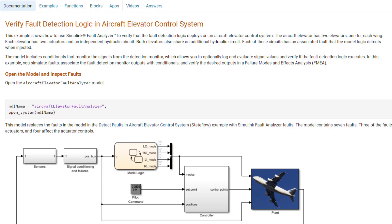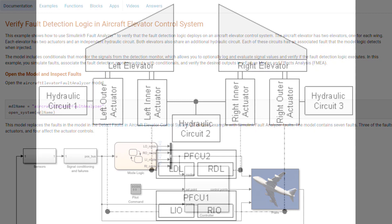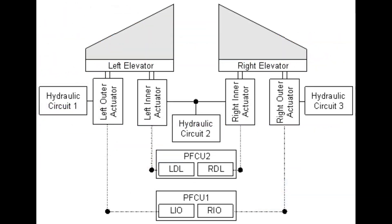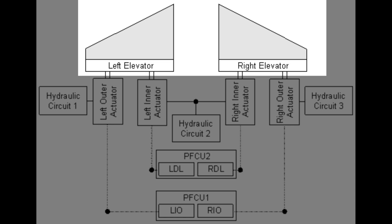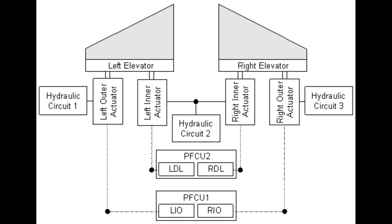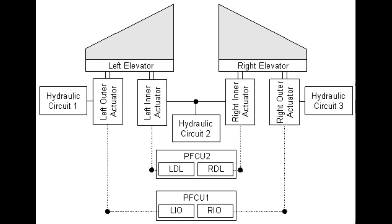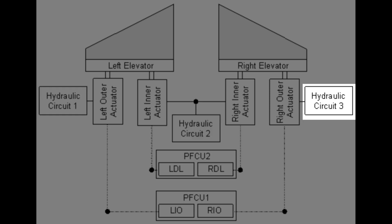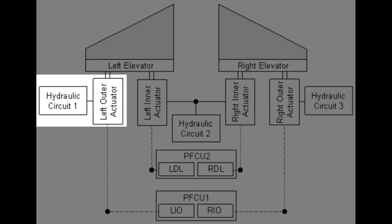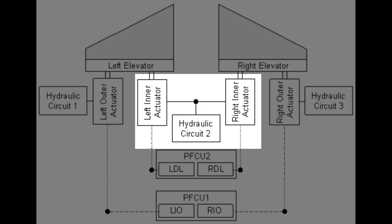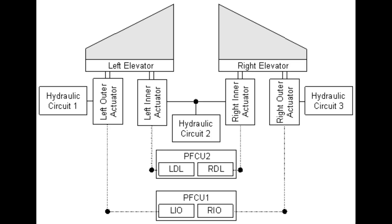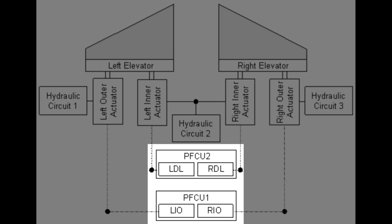Feel free to open the example using the link below to follow along. A typical aircraft has two elevators, one on each side of the fuselage, attached on the horizontal tails. To enhance the safety of the aircraft, the elevator control system contains redundant parts: four independent hydraulic actuators with two per elevator, three hydraulic circuits that drive the actuators, two primary flight control units or PFCUs, and two control modules per actuator.